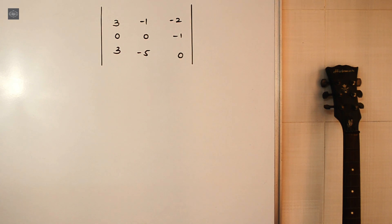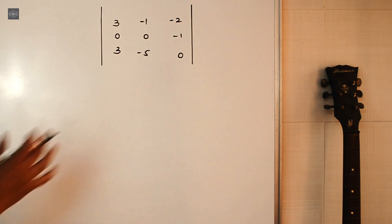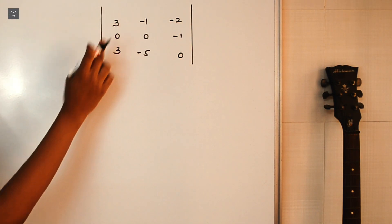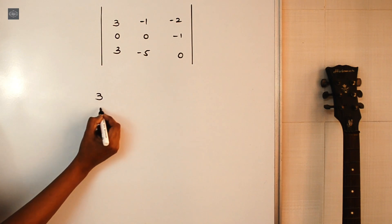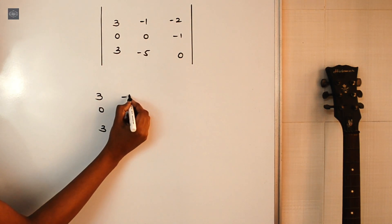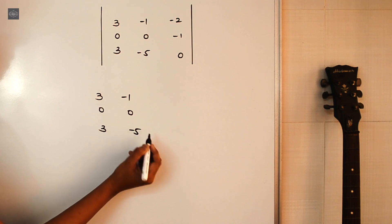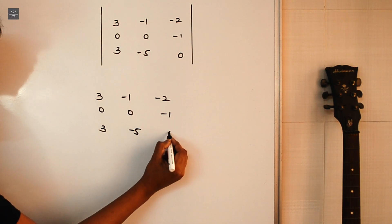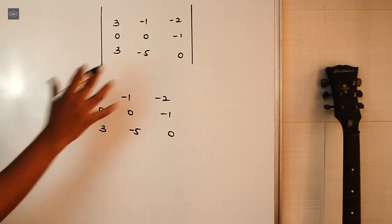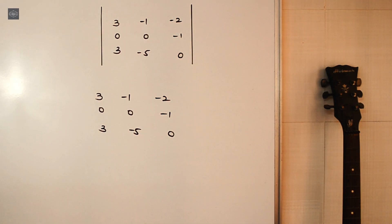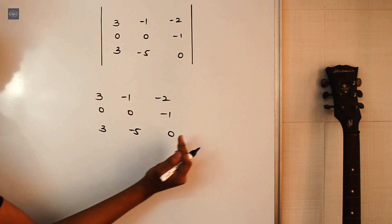Alright guys, here we have one determinant on the board. What we do is take all the elements of this determinant and write them out. The first column is 3, 0, 3. The second column is -1, 0, -5. And the third column is -2, -1, 0. Then we repeat the first two columns: 3, 0, 3 and -1, 0, -5.